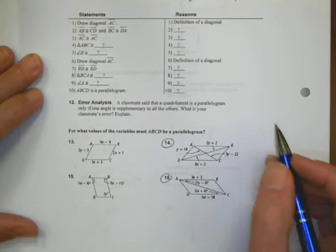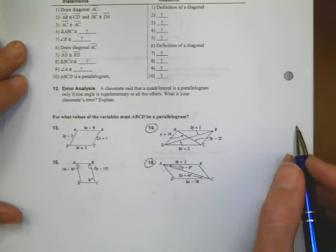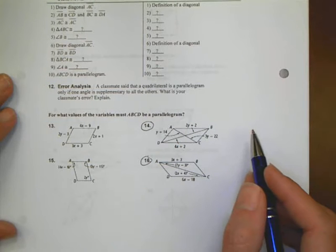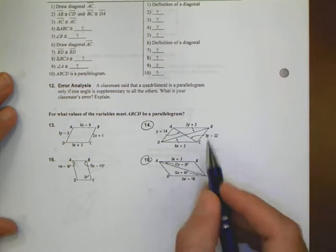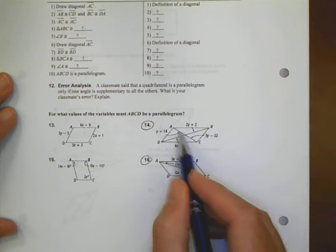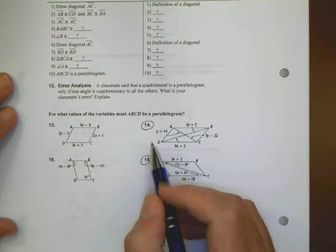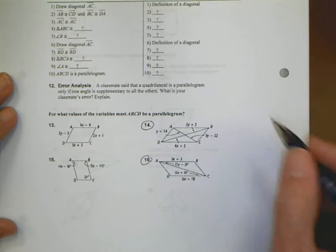Let's move down here to a couple more examples of just the problems themselves. Looking at number 14, same type of problem like we had on the front side of the page. We're going to make these values equal to each other to determine the value of x or the value of y.